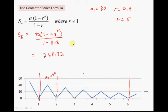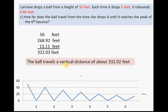But we need the whole blue line. So now we have to add in the 50. We've got to add in the 50 feet. Then we've got to add in the 268.92. And then we've got to add in from the sixth bounce to the peak, which is 13.11 feet. We add all that up. And what do we get? 332.03 feet. So that is... Well, let's take a look at it over here. The ball travels a vertical distance of about 332.02 feet from the time Lorraine drops it to the time it gets to the point where it gets to the peak after the sixth bounce. Okay? I hope you found this helpful. Thank you so much.